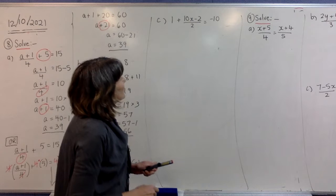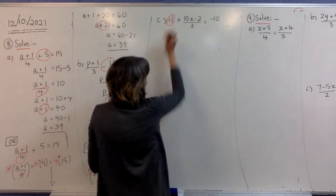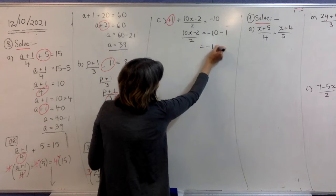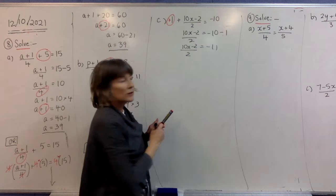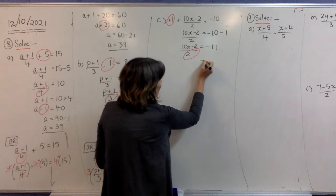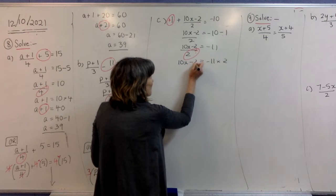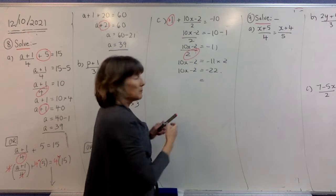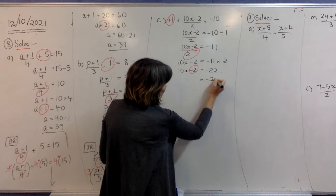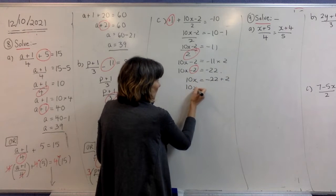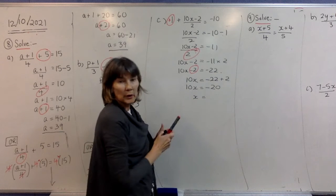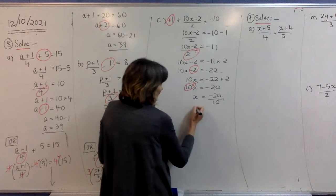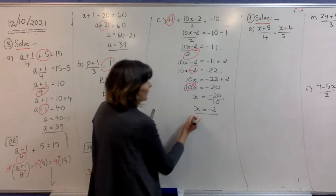Let's have a look at one more of these. The easiest way to do it would be to move this plus 1 over with the other number — that will be a minus 1 when we move it, giving us minus 11 over there. Now we're going to get rid of the divided by 2, so come over to the other side and times by 2. We've still got 10x minus 2 on this side. Work this out and we have minus 22 over there. Next thing, we're moving the minus 2 — come to the other side and plus 2 — you get minus 20. Now getting rid of our times 10: come to the other side and divide by 10, write it as a fraction, and use your calculator fraction key to finish that off. You'll get x equals minus 2.